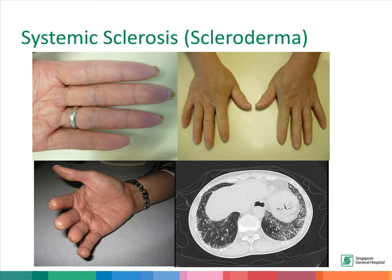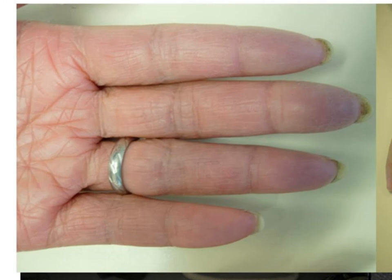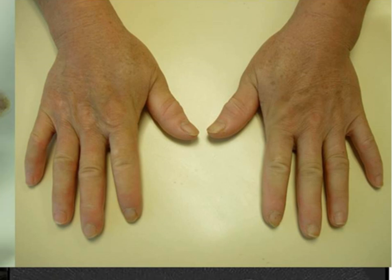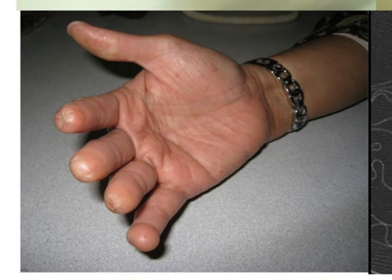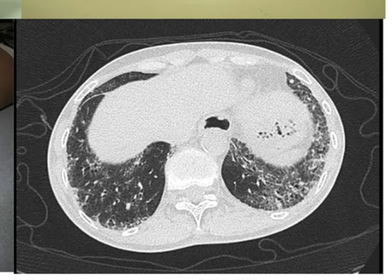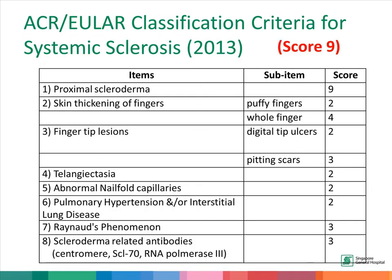This slide shows the important clinical features of systemic sclerosis. There is Raynaud's, with cyanosis of the fingertips due to vasculopathy. There is thickening of the skin on the fingers as well as the dorsum of the hands. There are typical fingertip lesions. And finally, an HRCT scan showing interstitial lung disease. All these clinical features are also useful for the diagnosis of systemic sclerosis, including skin thickening, fingertip lesions, features of vessel disease, and autoimmunity.